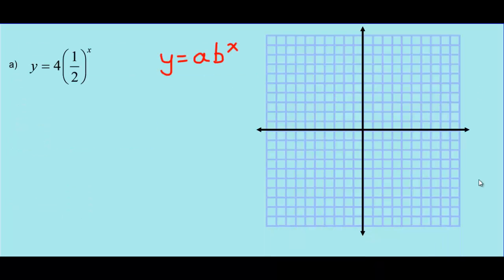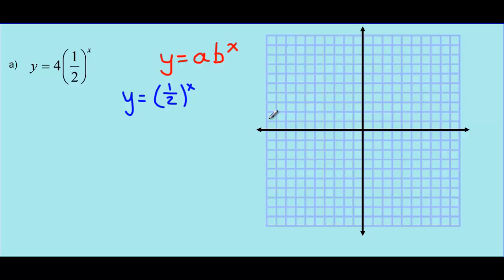Our first example is y equals 4 times 1 half to the exponent x. The a value is 4 and the b value is 1 half, so the parent function is y equals 1 half to the exponent x — this is like a half-life question. That 4 out front represents our initial value, so if we draw a sketch, our first point on the graph should be at y equals 4 when x equals 0. The initial value happens when x is 0, or time 0, giving us the point (0, 4).